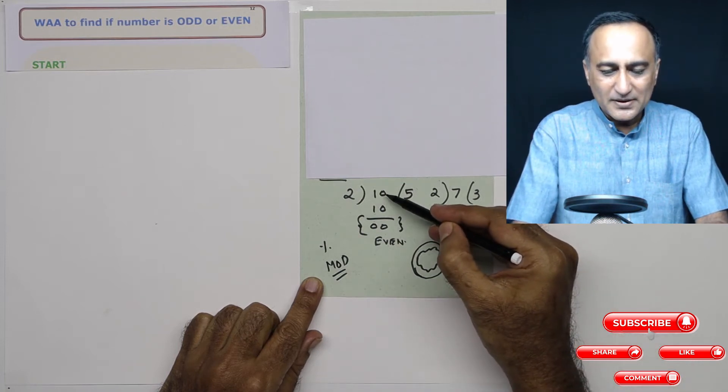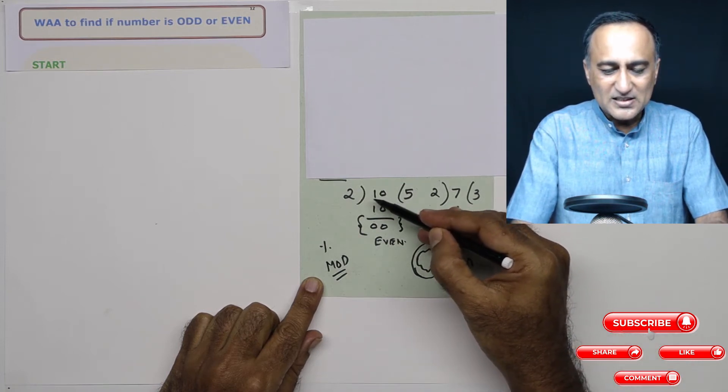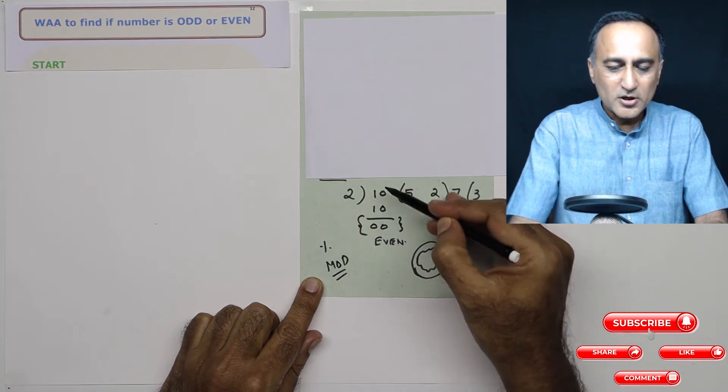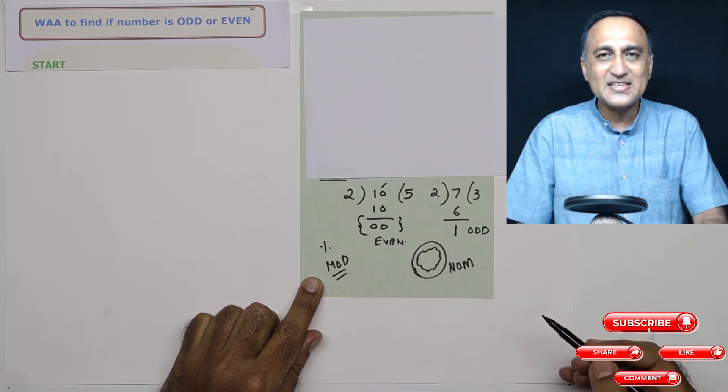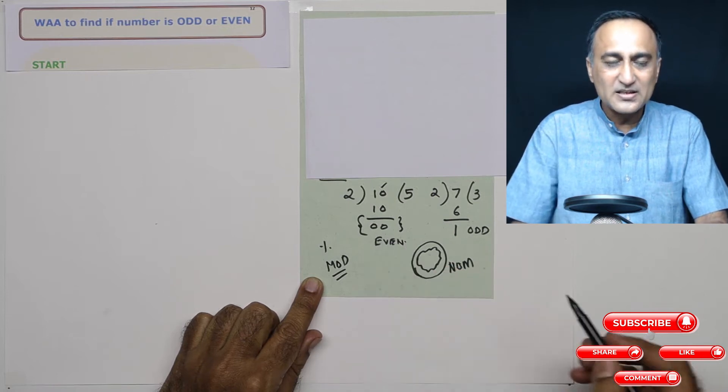So if I have the number 10, so 10 is divisible by two five times and the remainder is zero. So I can say automatically that 10 is an even number because the remainder is zero.